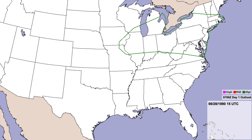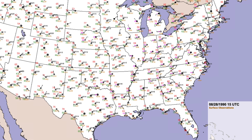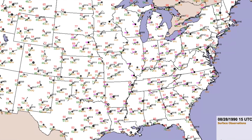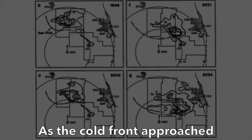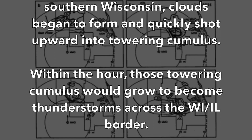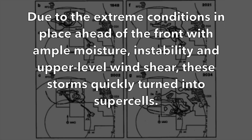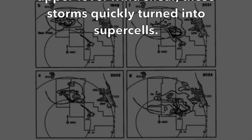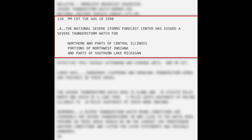Around 10 a.m. Central Daylight Time, the National Severe Storms Forecast Center in Kansas City, Missouri — the U.S. governmental entity prior to the Storm Prediction Center in Norman, Oklahoma — upgraded their severe thunderstorm outlook from slight to moderate risk for the northern Illinois area. Around 12 p.m. CDT, surface temperatures were nearing 90 degrees Fahrenheit and dew points were in the mid-70s to low 80s — extremely oppressive even for Florida, let alone the Midwest. As the cold front approached southern Wisconsin, clouds began to form and quickly shot upward into towering cumulus. At 1:28 p.m. CDT, the NSSFC issued a severe thunderstorm watch for portions of northern Illinois.